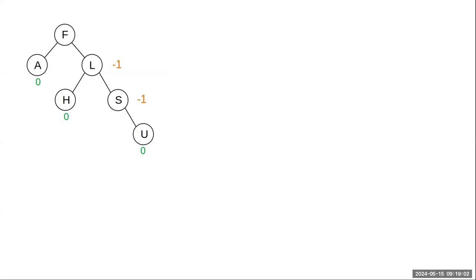These nodes have a balance factor of negative one because there's one on the right and nothing on the left. There's no way to improve on that — there's no way to make this subtree with S and U more ideal. So we're going to say this subtree is balanced as long as the height difference is no greater than one. This L-H-S-U subtree is also a balanced tree; there's no way we can make it more symmetric because there's an even number of nodes. When we get to the top, we have it unbalanced because the height of the right subtree is two greater than the height of the left subtree.